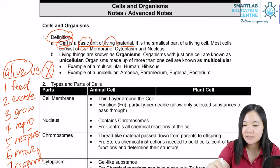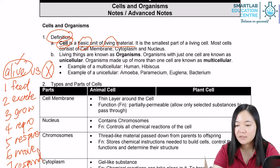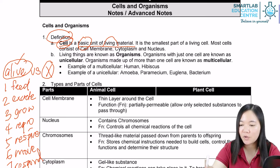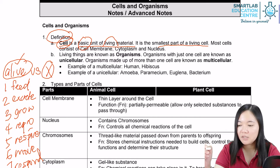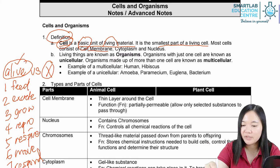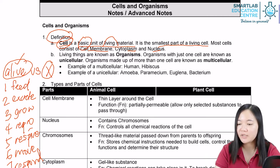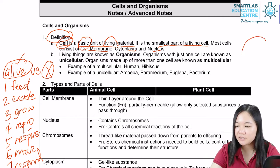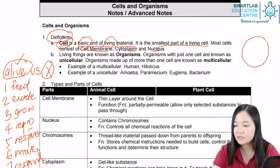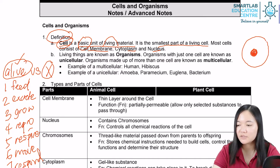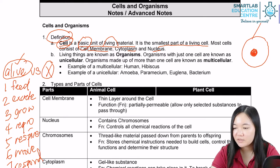Cells are actually the basic units of things that are alive — it is the smallest part of a living organism. Most cells consist of a cell membrane, cytoplasm, and nucleus. Drawing a simplistic cell: this outer boundary is the cell membrane, the white space in the middle is the cytoplasm, and the dense inner region is the nucleus.